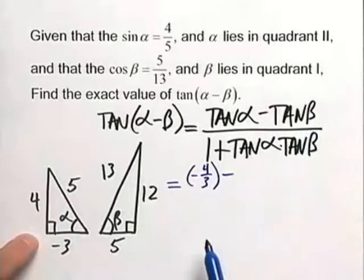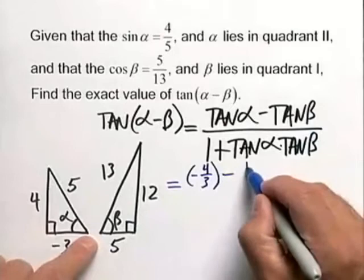Minus the tangent of beta. We need to go to the second triangle. Tangent here is, again, opposite over adjacent, which is twelve-fifths.